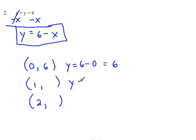We'll substitute in 1. So 6 minus 1 is 5. So the point 1, 5 is also a solution to this line. And now we'll find one more, so I'll plug in x is 2. So 6 minus 2 equals 4. So the point 2, 4 is also a solution to that line.